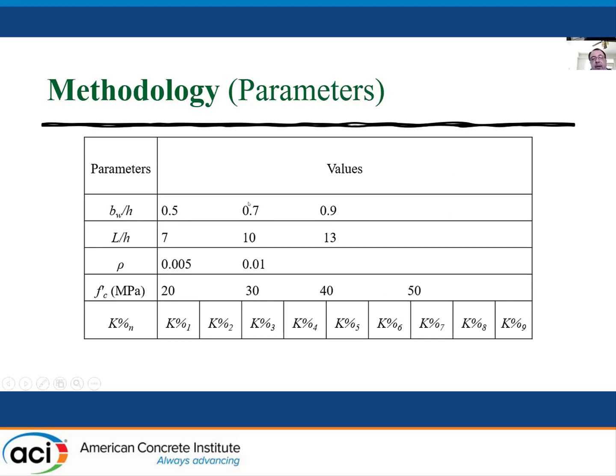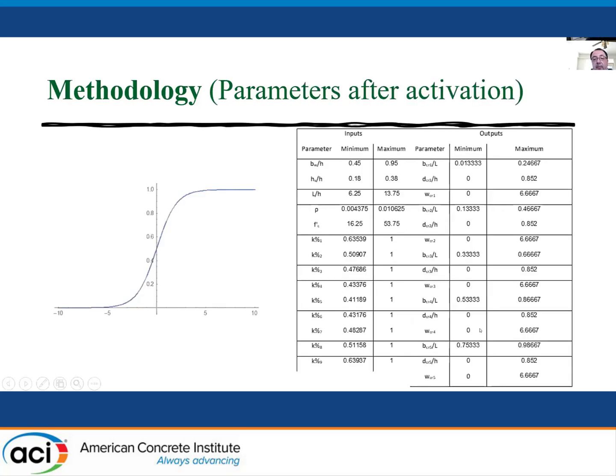So this table shows the parameters that we varied. BW over H was 0.5, 0.7, and 0.9. L over H ratio, and rho, and F prime C was between 20 and 50 megapascals. And then the K percentages were generated from the simulations. And as you can imagine, the K is going to go down if there's a proximity to a crack, and it's going to go back up to close to one or 100% if the crack is far away from the node that we are considering.